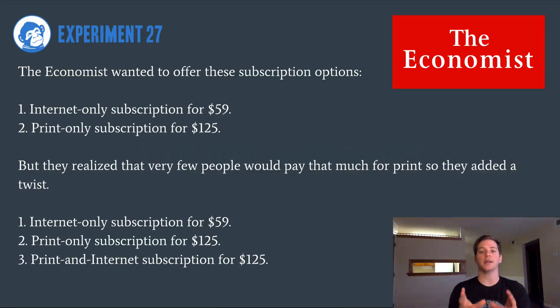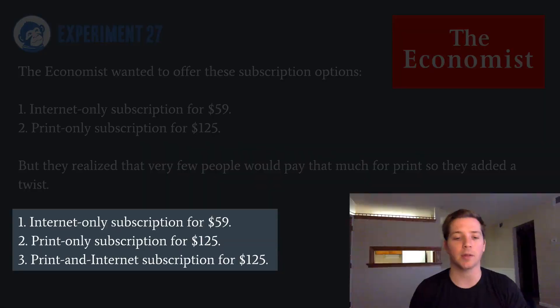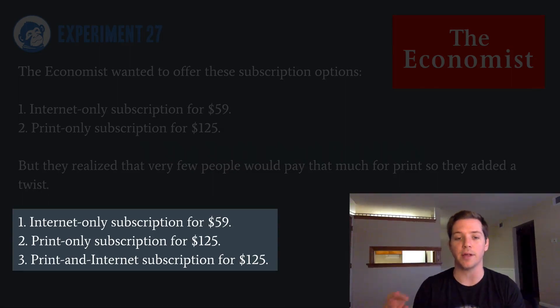Number one is the truth about relativity. The example he gives in this book is about The Economist. They wanted to offer two subscription options: an internet-only subscription for $59 and a print-only subscription for $125. But they found that more people were going to the internet-only subscription and they weren't making enough money — they needed to increase their print subscriber rate. So by adding a third option, a print-and-internet subscription for $125, they could increase the number of people that signed up for that third option, thus increasing print. The big takeaway is that people don't compare price based on what the value is to them — they compare prices based on the other prices they see.